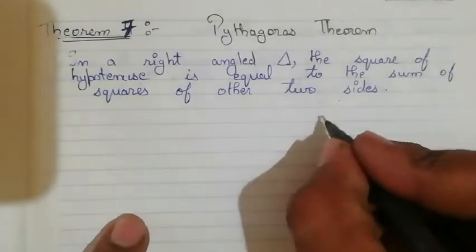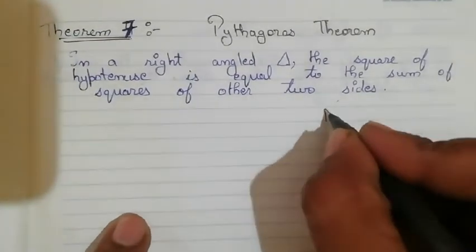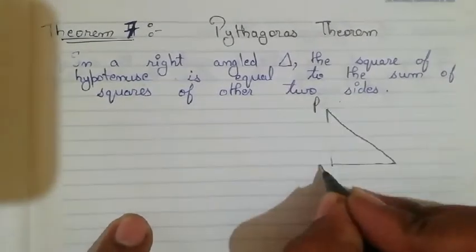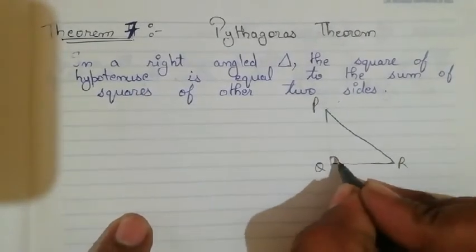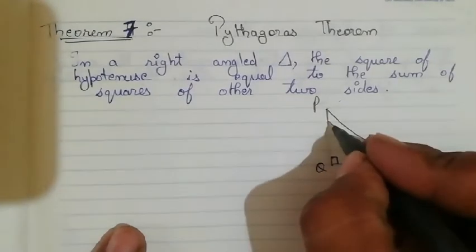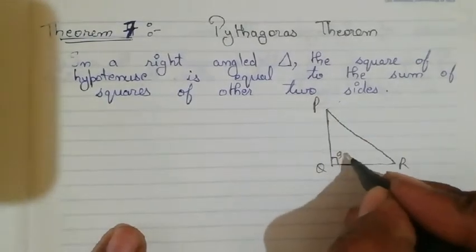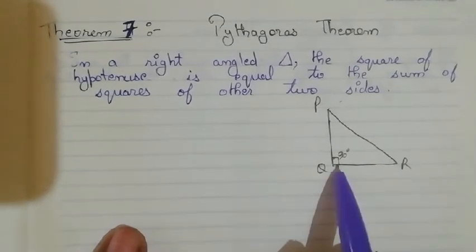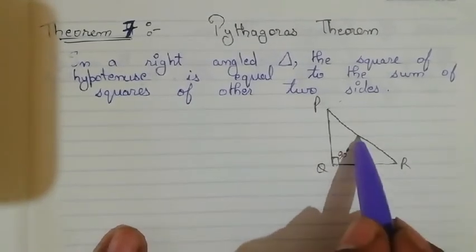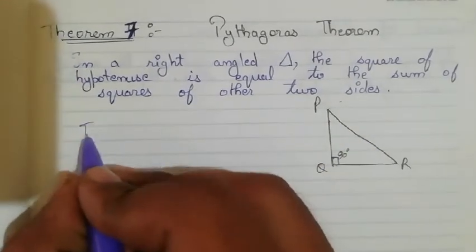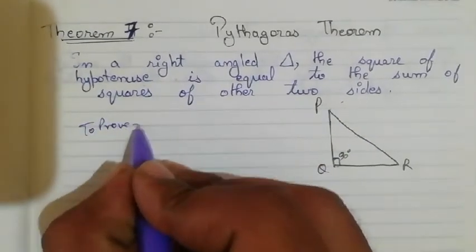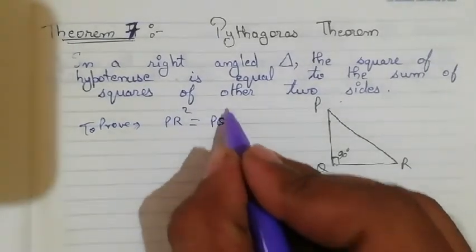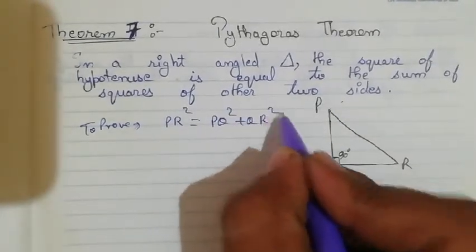Let me draw a right-angled triangle PQR, right-angled at Q. This means angle Q is equal to 90 degrees. The side opposite to the 90-degree angle is called the hypotenuse. So what we have to prove here is that PR² = PQ² + QR².